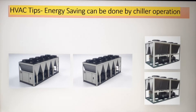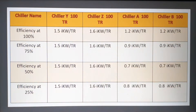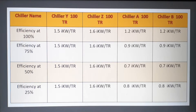Let's start the topic. Here I have four chillers. Chiller Y and Z are non-VFD chillers, and chiller A and B are VFD chillers. Non-VFD chillers do not have part-load efficiency, whereas VFD chillers — chiller A and B — do have part-load efficiency.